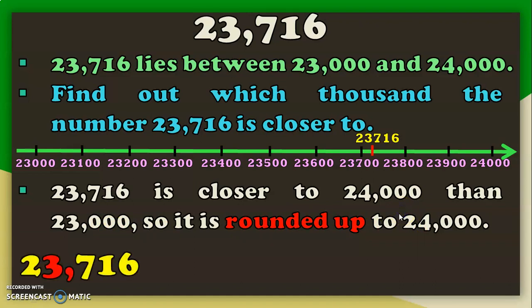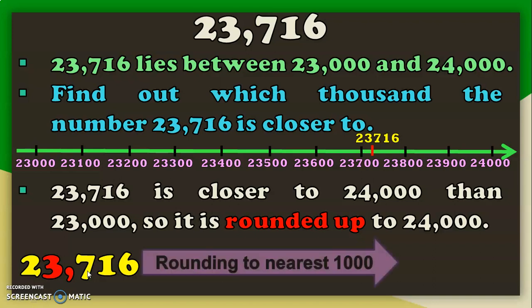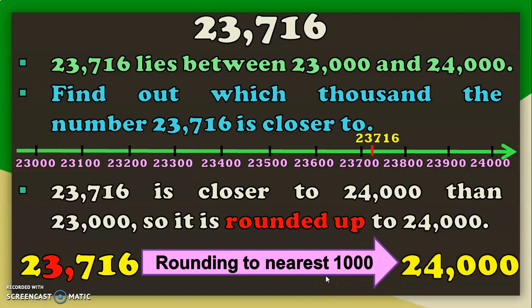Using the other method for 23716, rounded to the nearest 1000: look at the thousands place — you have the digit 3. Then look at the digit immediately after it, which is 7. Since 7 is bigger than 5, the number moves towards the upper limit. So, rounding 23716 to the nearest 1000 gives 24000.